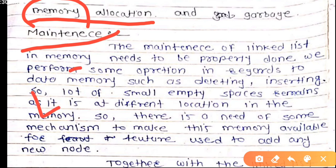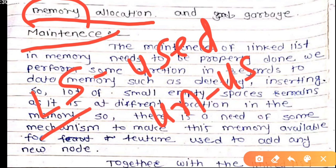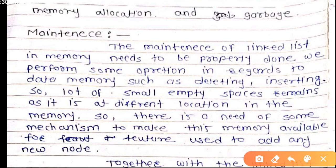When we create a linked list, there are two types of things in a linked list: used memory and unused memory. These two types — used and unused memory — need to be managed properly. Managing these is what we call memory allocation or memory maintenance.